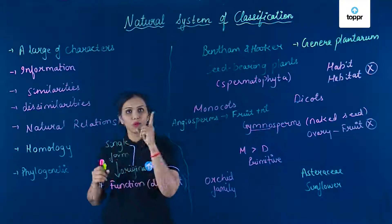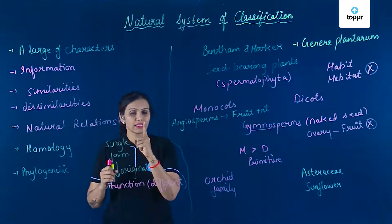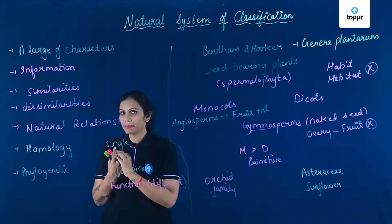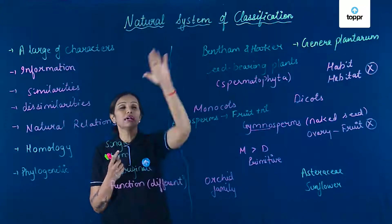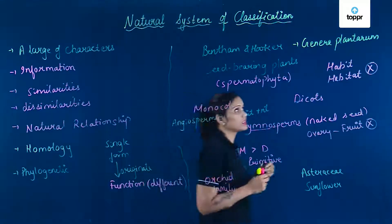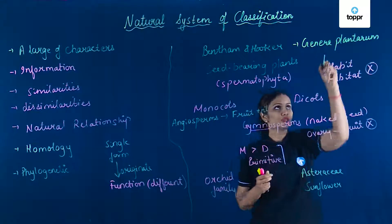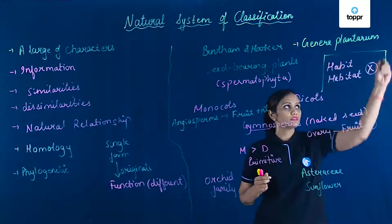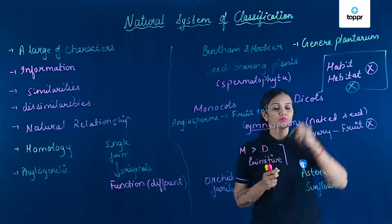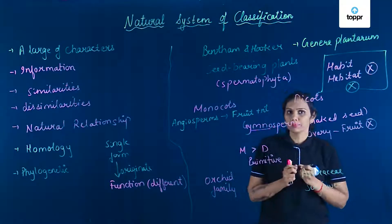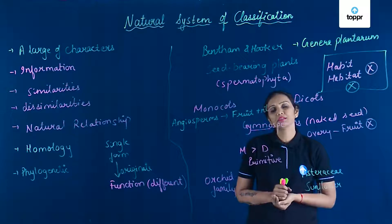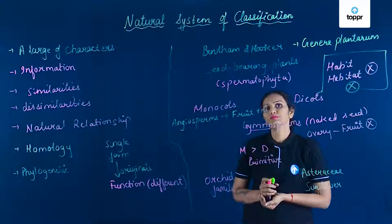Artificial mein humne ek character liya tha, and that too habit and habitat. In artificial system of classification, we don't consider these two. So it is well accepted. I hope you understood. Thank you.